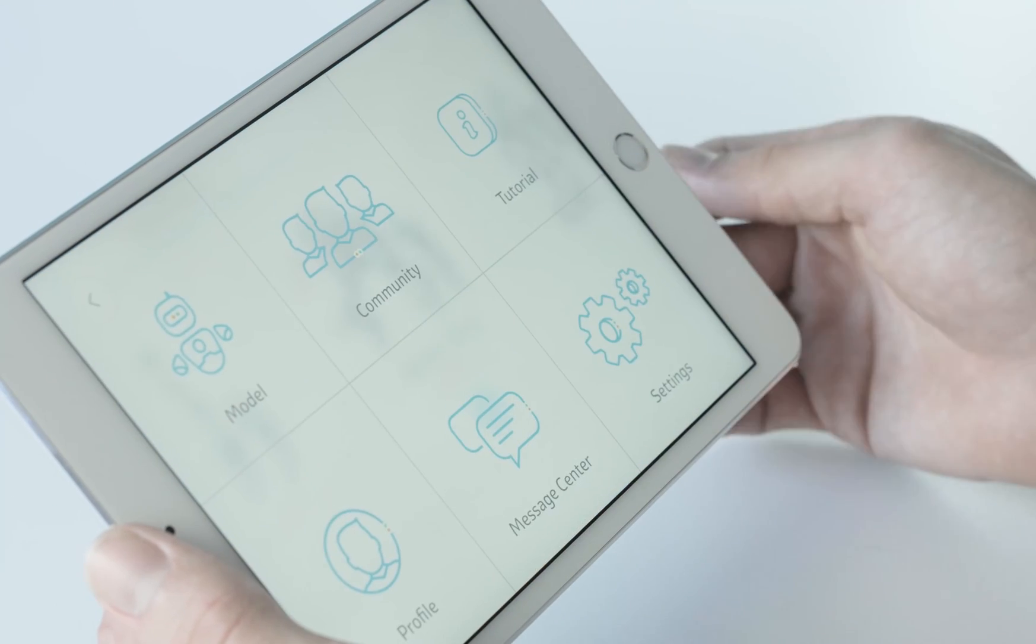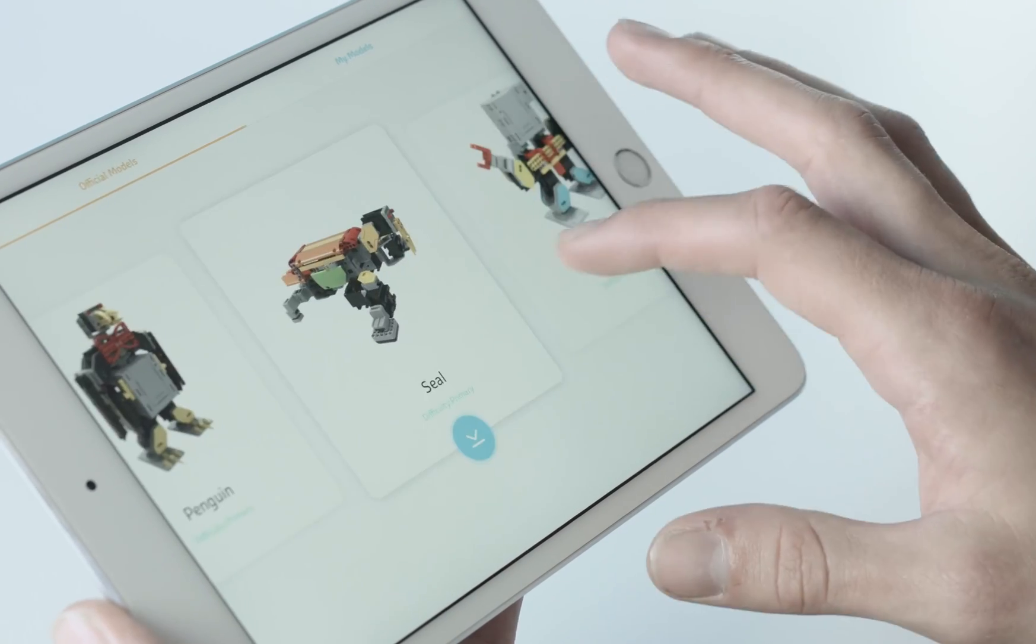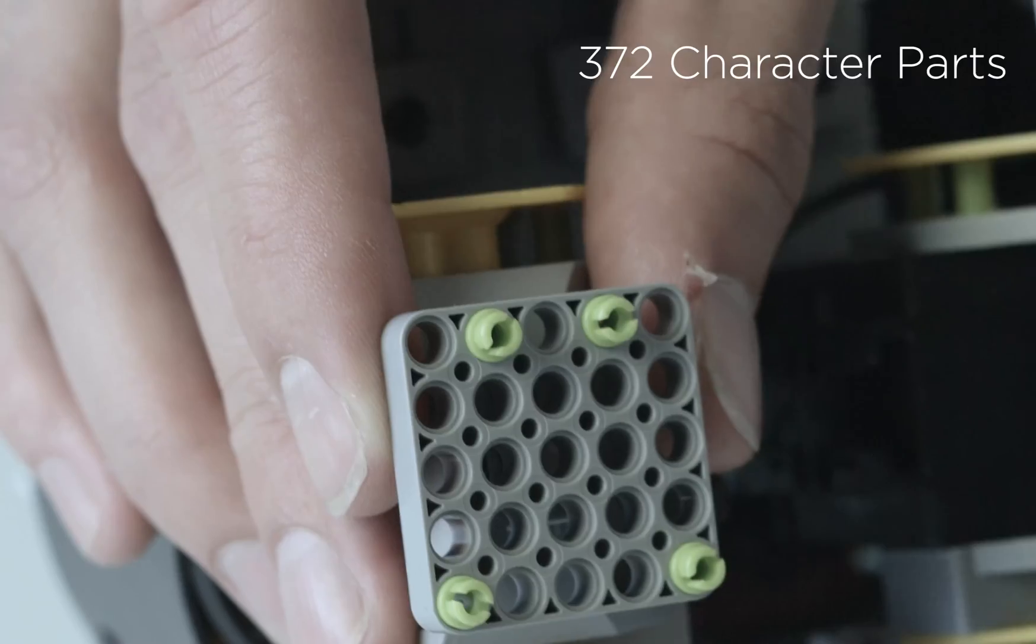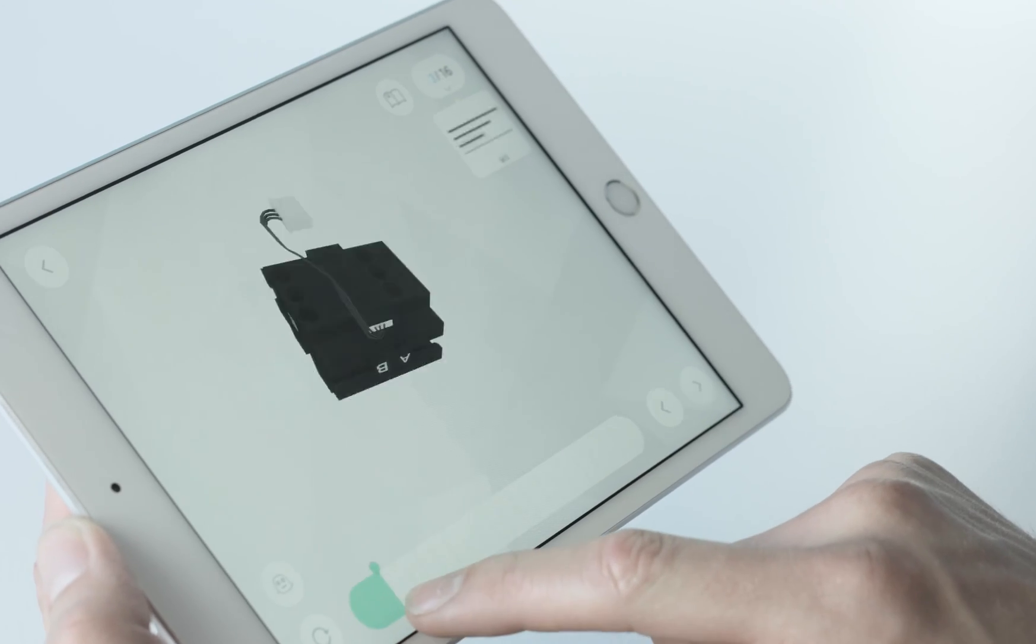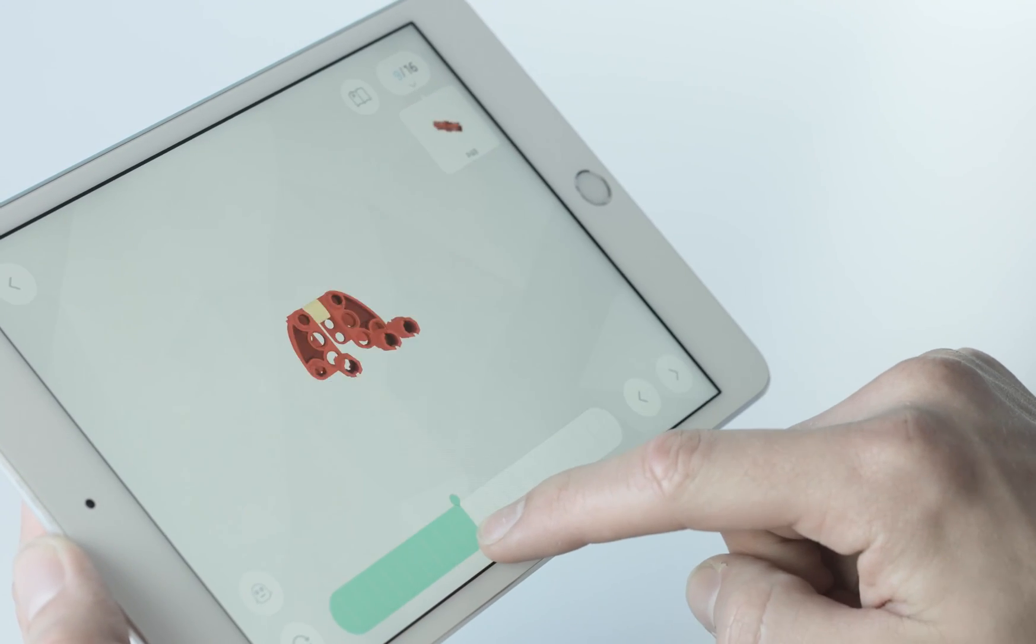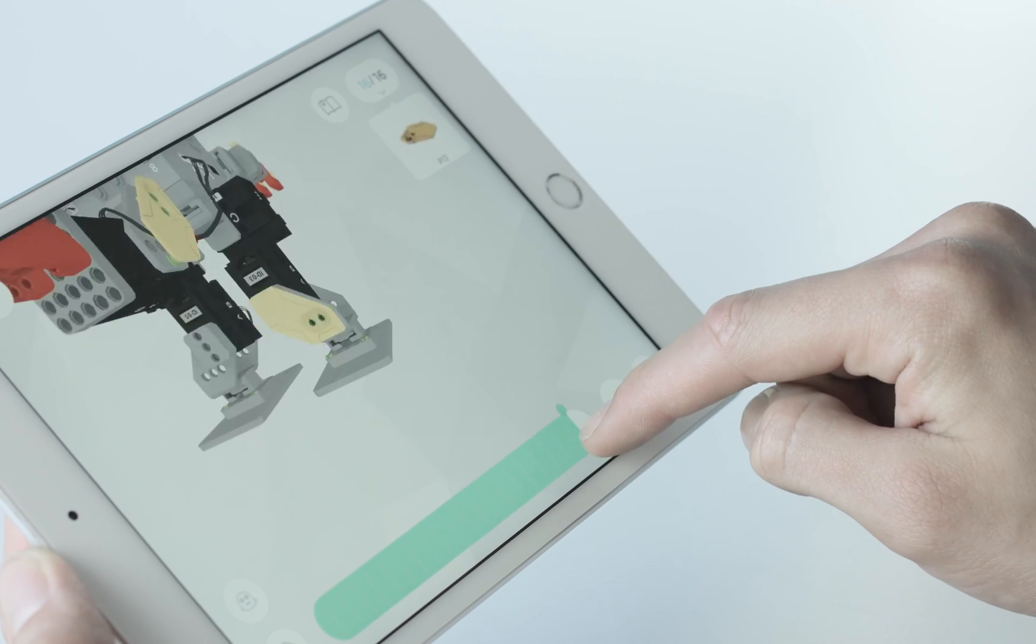Inside the app, click on the model button and pick which Explorer Kit model you would like to build. The box includes all the parts needed to build all five pre-designed characters. When you've chosen a pre-designed model, the app will give you a 3D 360 degree view of step-by-step instructions on how to build that character.